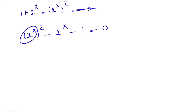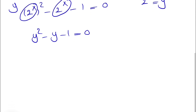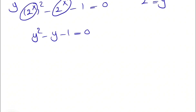Now we let y equal 2^x. Substituting, we get y squared minus y minus 1 equals 0. This is a quadratic equation, so we can apply the quadratic formula, where a equals 1, b equals minus 1, and c equals minus 1.